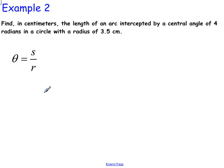Example two. Find, in centimeters, the length of an arc intercepted by a central angle of four radians in a circle with a radius of 3.5 centimeters. Okay, so they want us to find the length of an arc.